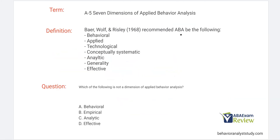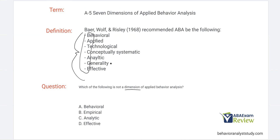Baer, Wolf, Risley, 1968, recommended ABA be the following. These seven items are our dimensions. What gets tricky is when we start talking about assumptions, understandings of science, and dimensions — we have a lot of categories that are easy to mistake. You want to get an acronym; I like CAGE. You don't want to start mixing up the dimensions and the assumptions. For example, 'which of the following is not a dimension of ABA?' — empirical is one of our assumptions, not a dimension. Fluency is so important because under stress, it's easy to make these little mistakes that can cost you.